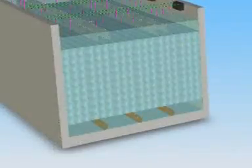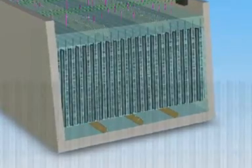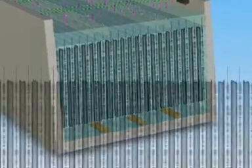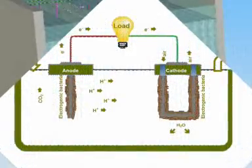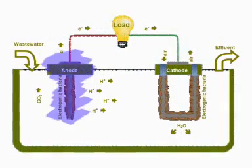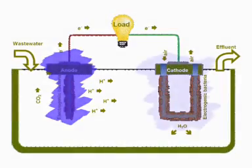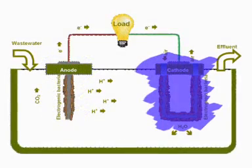The Electrode Modules consist of a multiplicity of high surface area anodes and cathodes installed in close proximity. A bioelectrochemical process occurs in two half-cell reactions: one on the brush anode and the other on the air cathode.